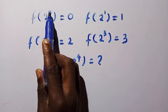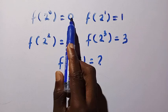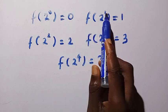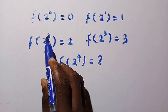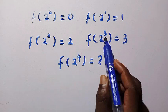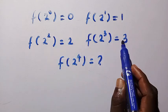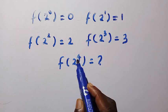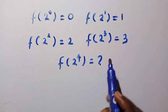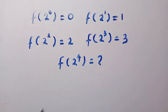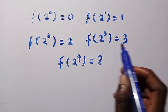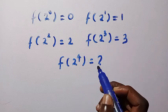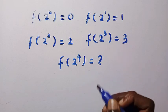If we check the powers: the power is 0 and the output is 0; the power is 1 and the output is 1; the power is 2 and the output is 2; the power is 3 and the output is 3. So the next one, 2 to the power of 4, would be 4. But the condition here is that the function is a quadratic, so we don't get 4 — we get something different.